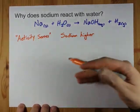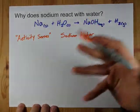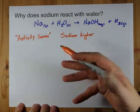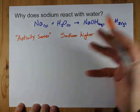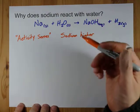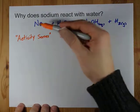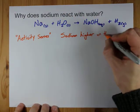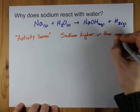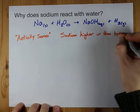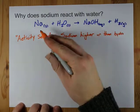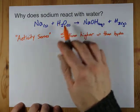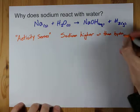The activity series is a list of the reactivities of — well, the metal activity series is for metals like sodium, and sodium is higher on that list than hydrogen is. So you're taught that sodium automatically displaces hydrogen in this compound.